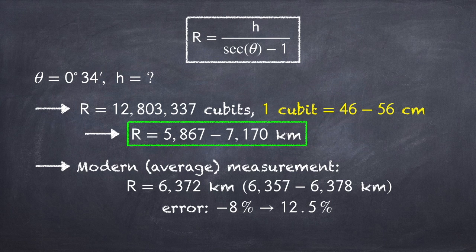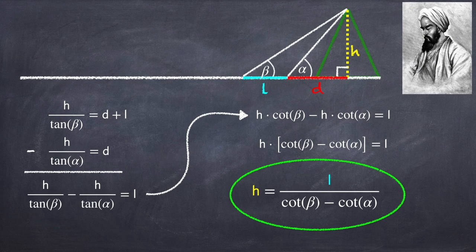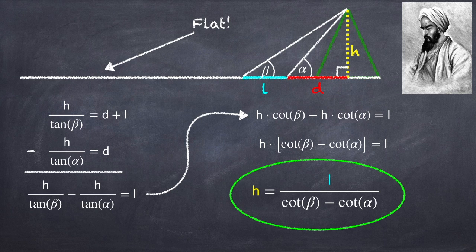But actually, there's a problem with this method. First off, how do you know that the land that you're looking over when you're looking at the horizon is actually flat, or I should say, actually level?